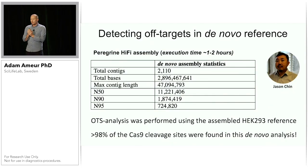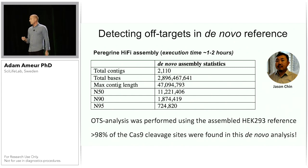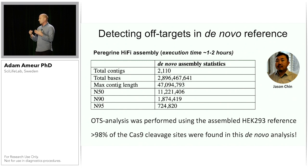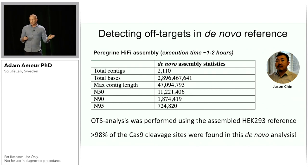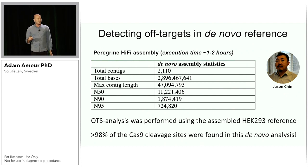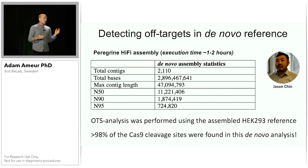In collaboration with Jason Chin, we assembled all of these Hi-Fi reads using the new assembler Peregrin to construct a complete de novo genome. We assembled a quite high-quality genome and mapped our off-target sequencing data to this de novo assembly. In this way, we could recover more than 98% of the cleavage sites, meaning we can use these methods also in organisms where we don't have a known reference sequence.